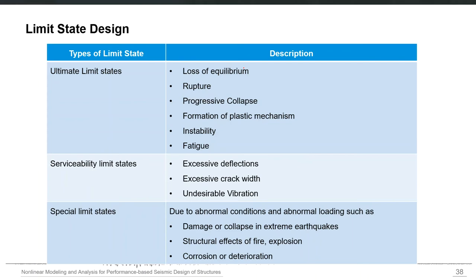Ultimate limit states include loss of equilibrium, rupture, progressive collapse, formation of a plastic mechanism, instability, or fatigue. Serviceability limit states include, for example, excessive deflections, crack widths, and vibrations. There can also be special limit states. You must identify all possible limit states in your structure during the design life — those intended or which can be anticipated.